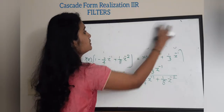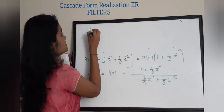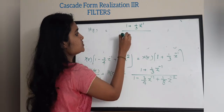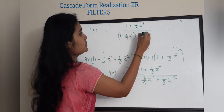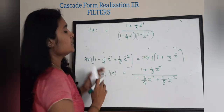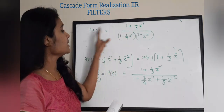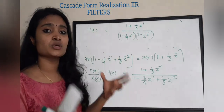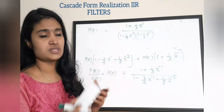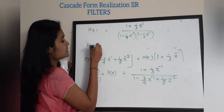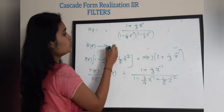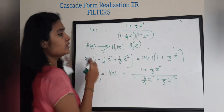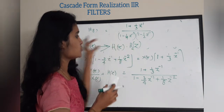So H(z) is now: (1 + 1/3 z⁻¹) / [(1 − 1/4 z⁻¹)(1 − 1/2 z⁻¹)]. Since the denominator is a product, you can represent H(z) as a product of two other transfer functions: H(z) = H1(z) · H2(z). You now have to write expressions for H1(z) and H2(z).